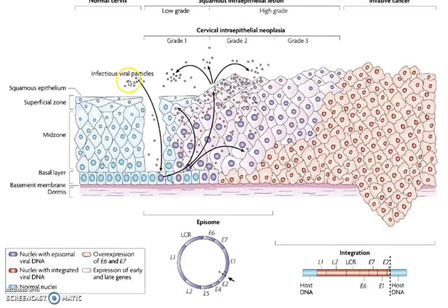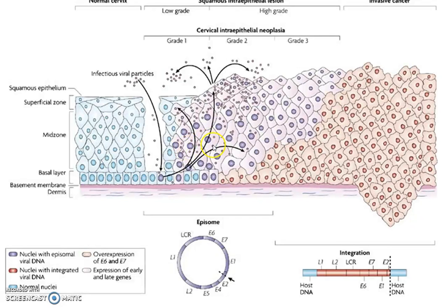Here is the mechanism of HPV infection. Infectious particles infect basal cells, which give rise to all the overlying cells: the proliferative layer, mid zone, and superficial zone — the cells scraped off in a cervical smear. In non-infected cells, nuclei are shown in pale blue. In infected cells, purple nuclei contain episomal viral DNA — a circular DNA genome that enters the cytoplasm. The cell's replication machinery transcribes and copies viral genes to make more viral proteins and viral genome, which buds off to infect other cells — the normal viral life cycle.